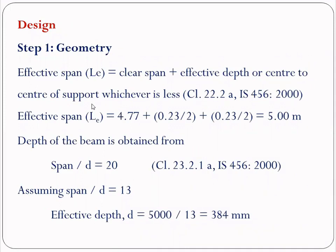Step 1: Geometry. In this step we are going to find out the effective span, effective cover, effective depth, overall depth, as well as the width of the beam. The effective span is the sum of clear span plus effective depth, or the center to center of support, whichever is less — taken from clause 22.2 of the code. Since we don't have the effective depth, we start with center to center of support: effective span = 4.77 + 0.23/2 + 0.23/2 = 5 meters.